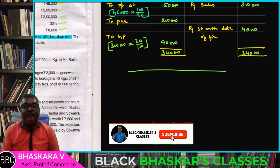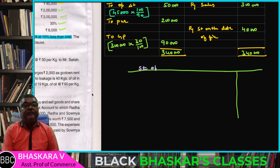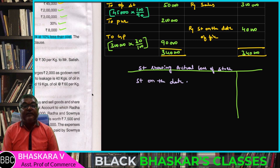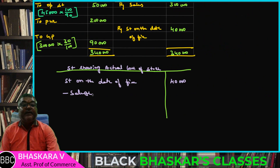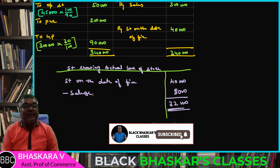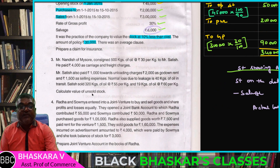Next, prepare a statement showing the actual loss of stocks. Stock on the date of fire is 40,000. Let's solve it. Actual loss of stock — 8,000 and 30,000. So actual loss of stock is determined.